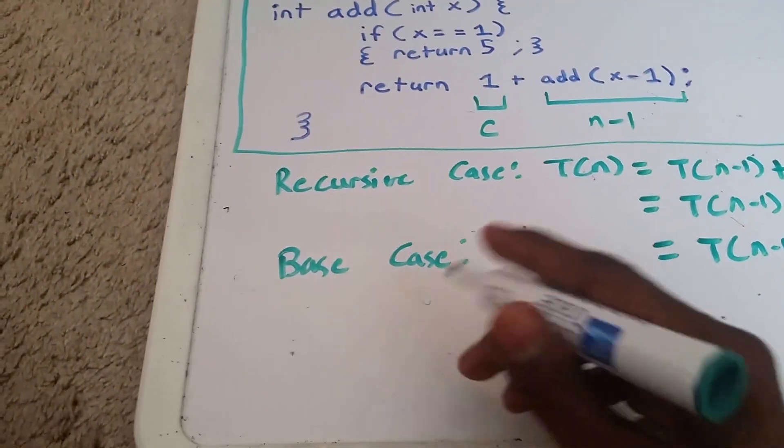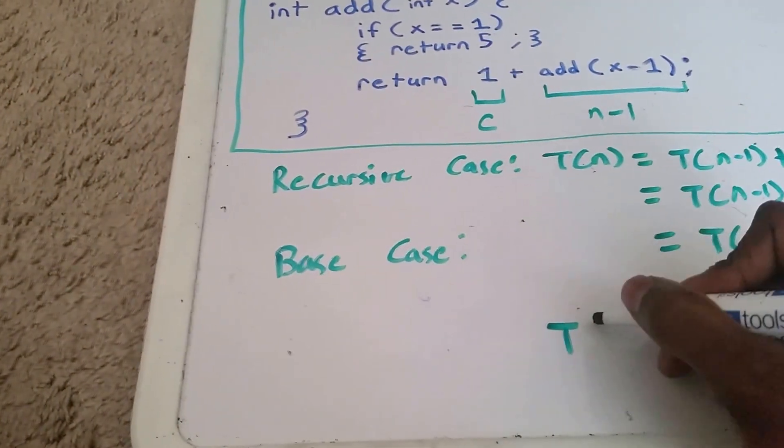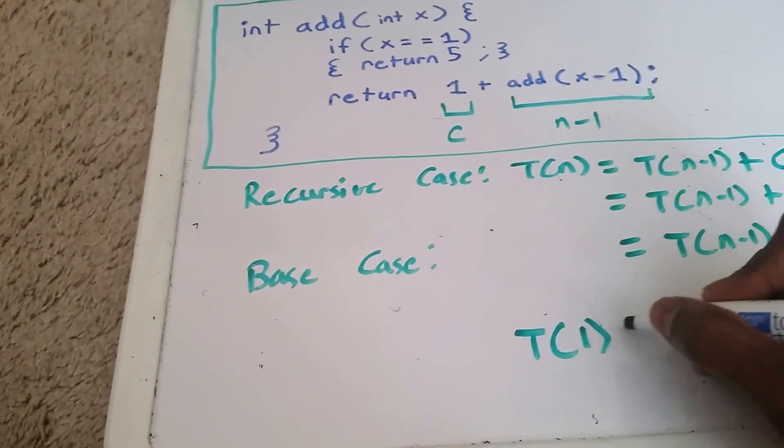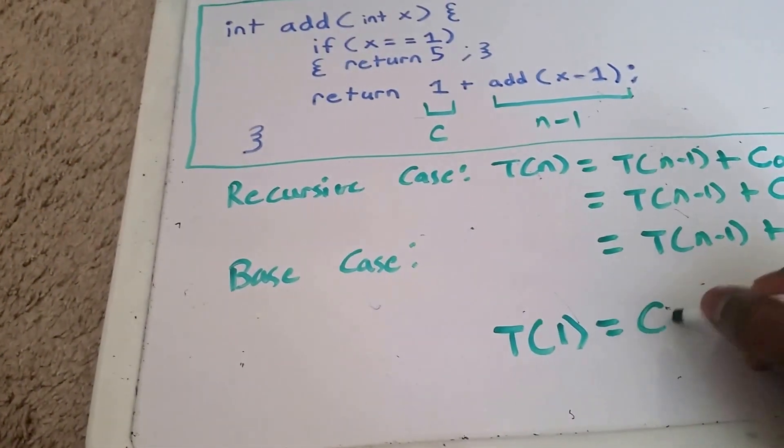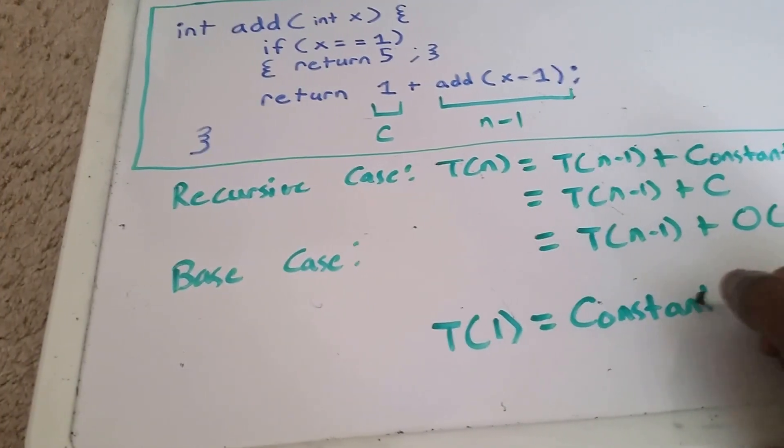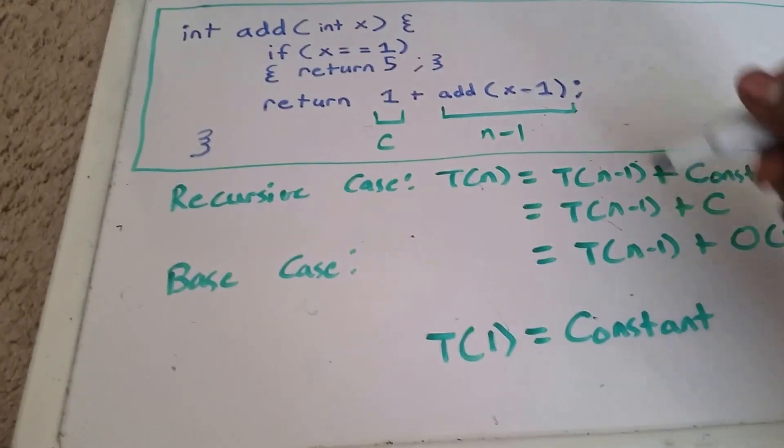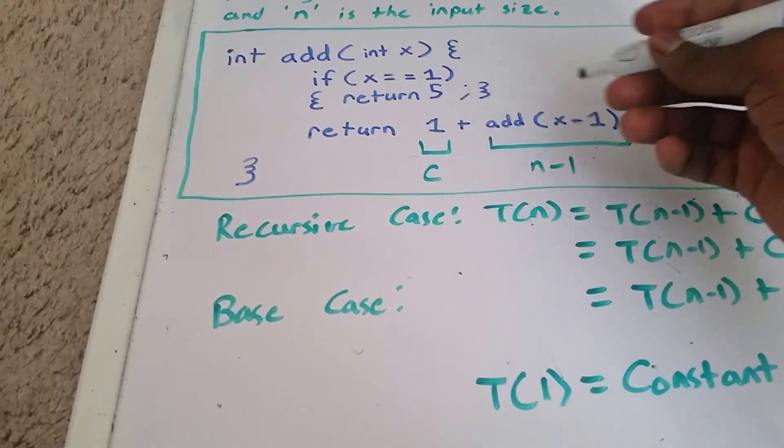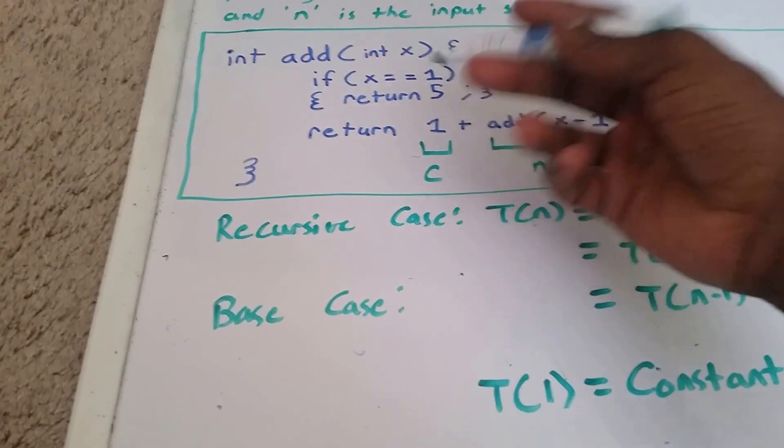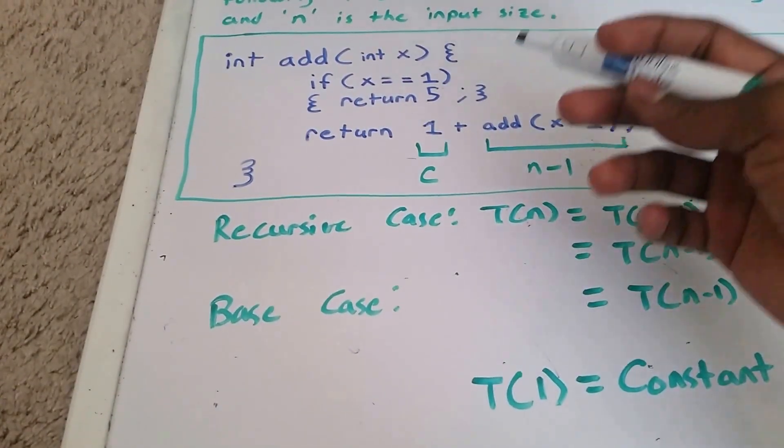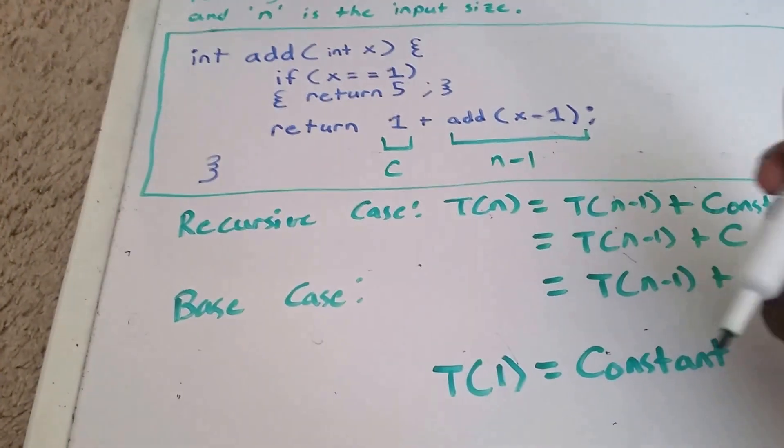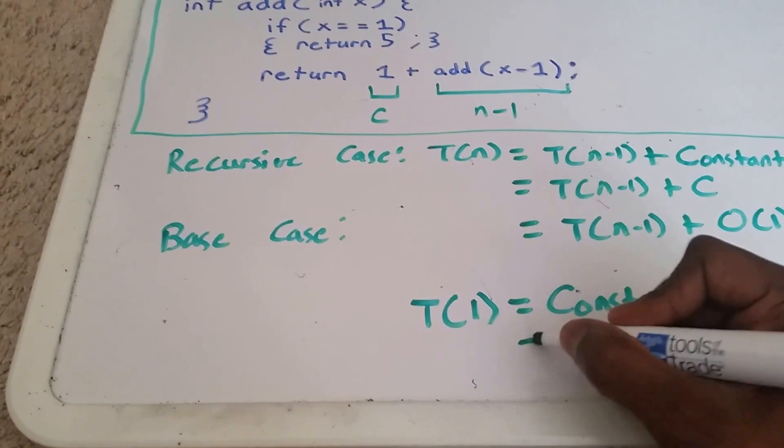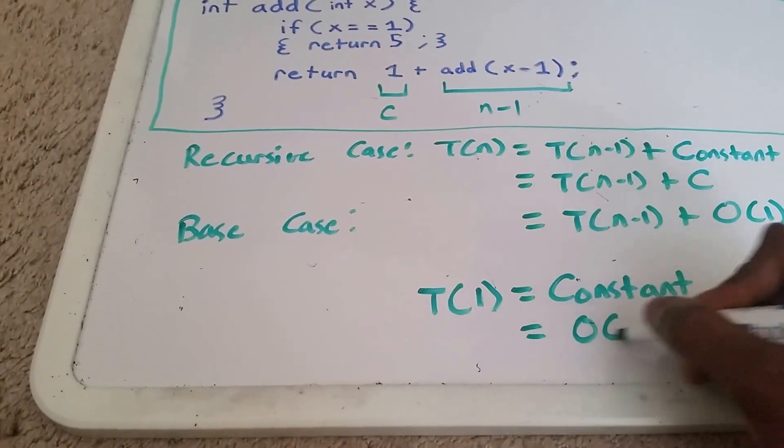For the base case, the base case is T of input of size 1, and it's just going to be some constant. The base case will always be some constant. So here we're just returning a value 5, so the time that it takes to return this value 5 is a constant amount of time. Now this can also be rewritten as big O of 1.